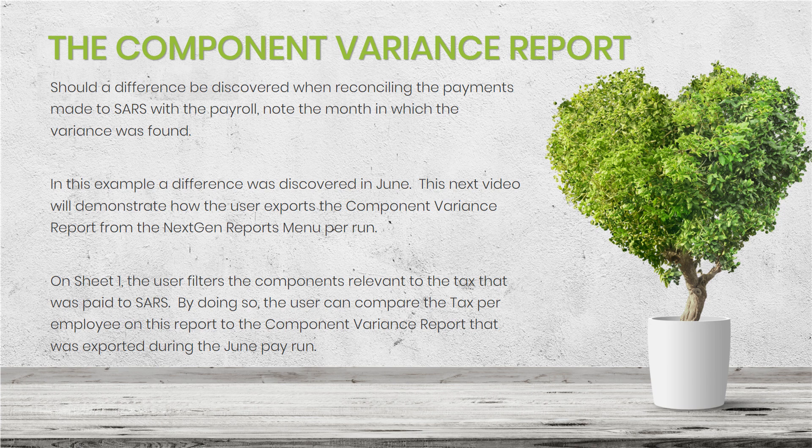On Sheet 1, the user filters the components relevant to the tax that was paid to SARS. By doing so, the user can compare the tax per employee on this report to the component variance report that was exported during the June pay run.